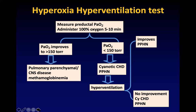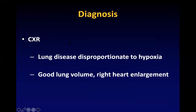On X-ray, sometimes the lung disease is proportional to the hypoxia — if the lung is not bad but hypoxia is severe, that is a clue. Good lung volume with right heart enlargement occupying more than two and a half spaces on the right side of the sternum can be a marker of PPHN.